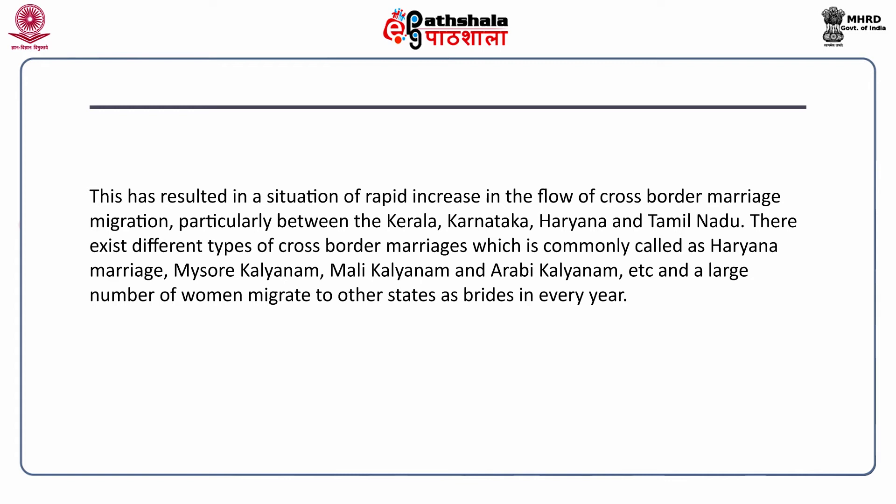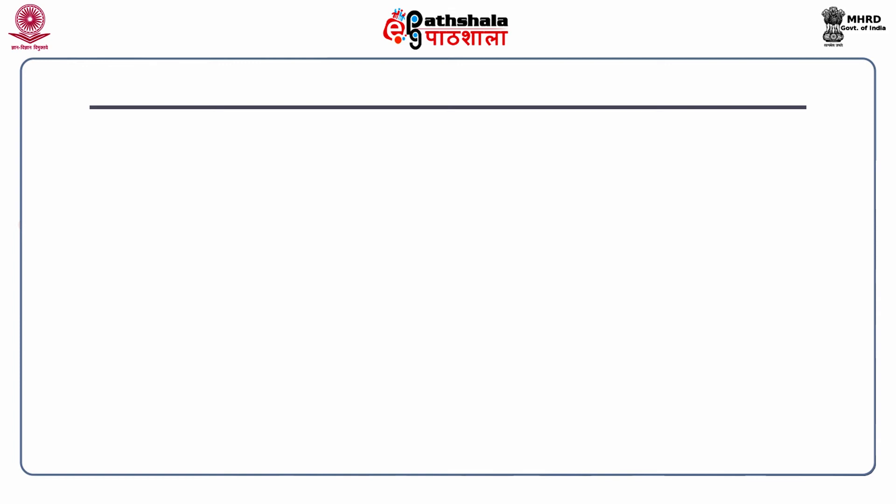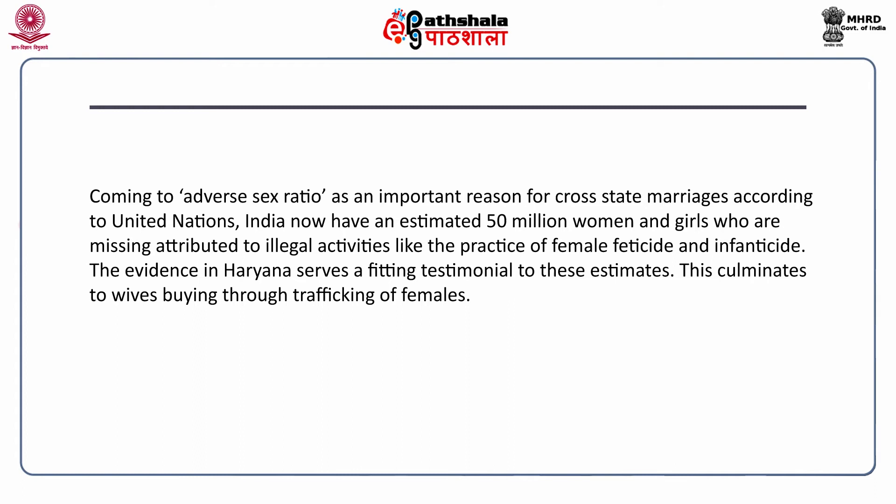This has resulted in a rapid increase in the flow of cross-border marriage migration, particularly between Kerala, Karnataka, Haryana and Tamil Nadu. There exist different kinds of cross-border marriages, commonly called Haryana marriage, Mysore Kalyanam, Mali Kalyanam and Arabi Kalyanam, and a large number of women migrate to other states as brides every year. According to the United Nations, India now has an estimated 50 million missing women and girls, attributed to illegal practices like female feticide and infanticide. This culminates in wives being bought through the trafficking of females.